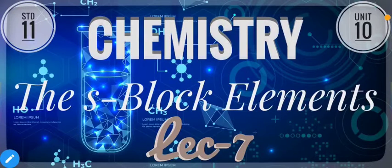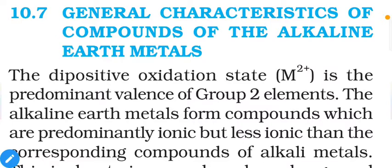Hello students, welcome to the seventh lecture of s-block elements. Today we are going to discuss some general characteristics of compounds of alkaline earth metals. The dipositive oxidation state is the predominant valence of the group 2 elements, meaning all group 2 elements show a +2 oxidation state as normal.